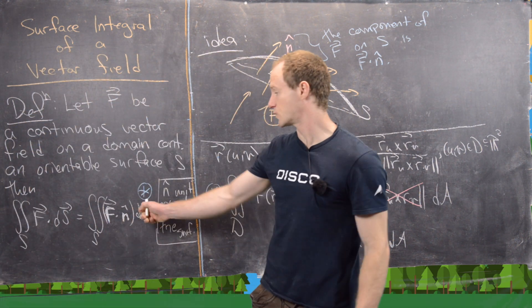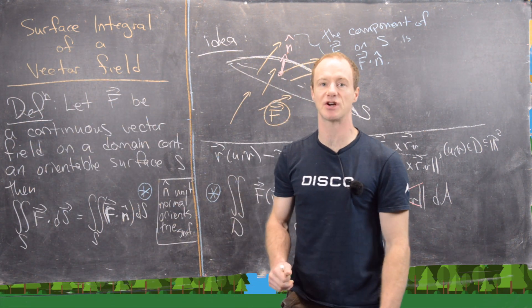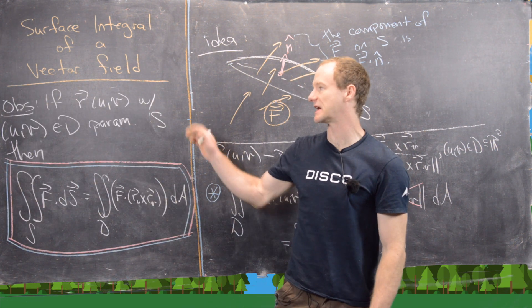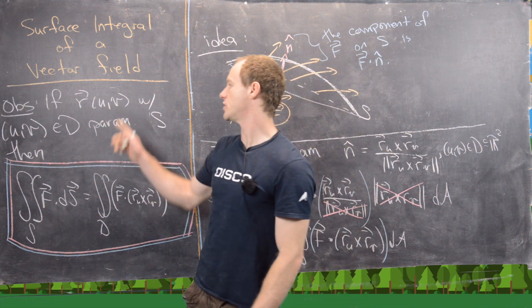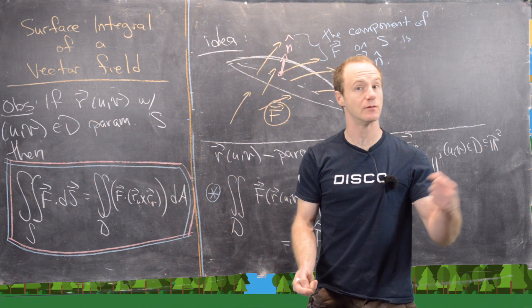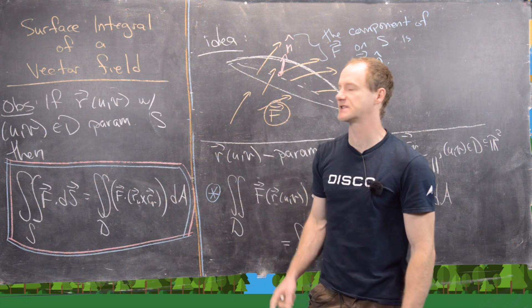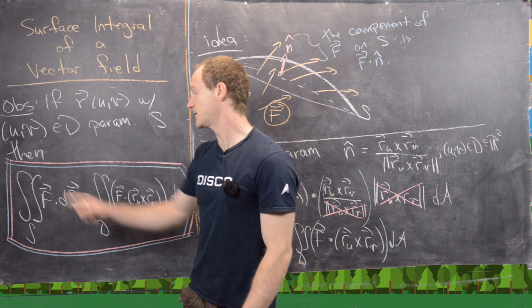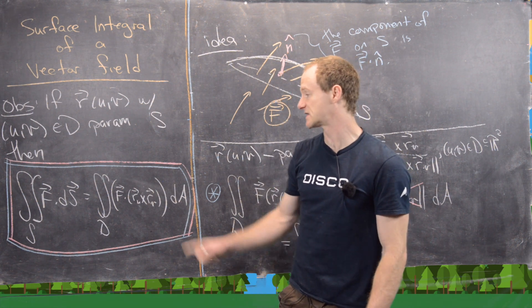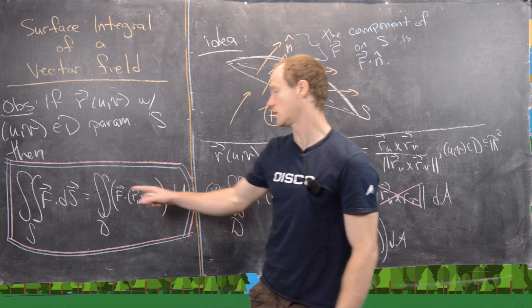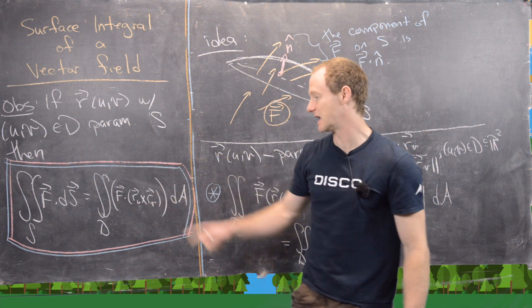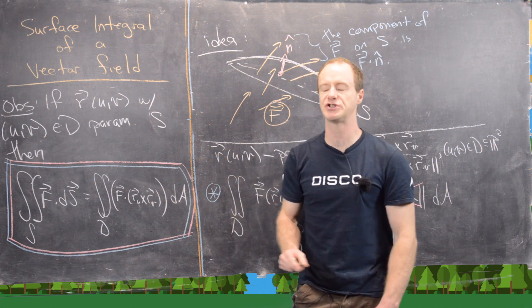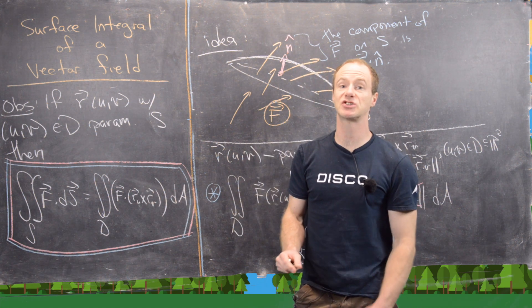We've written the surface integral in terms of a double integral — just the vector field dotted with the cross product made from the parametrization. So the key observation is: if R(u,v), with (u,v) in D ⊆ ℝ², parametrizes our surface S, then the surface integral of the vector field over S equals the double integral over D of F dotted with R_u cross R_v, dA — a plain old double integral calculable by methods from earlier in the course.